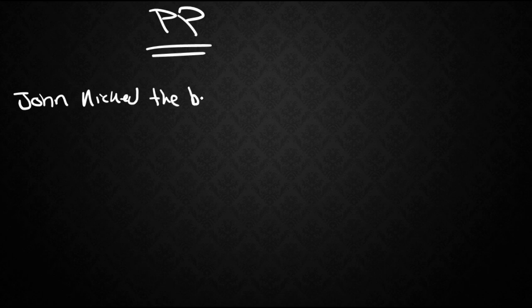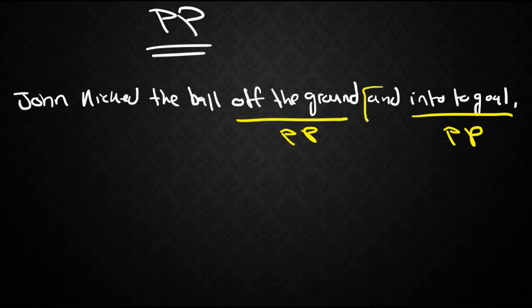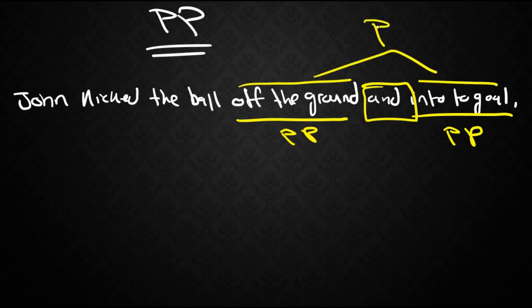Last one we're going to talk about here is the prepositional phrase. Now there's less evidence to bar projections in a prepositional phrase but nevertheless the evidence still exists. Take for example John kicked the ball off the ground and into the goal. So we have the prepositional phrase off the ground and into the goal being coordinated meaning that these two are of the same type and they are coordinated together so they seem to create one big prepositional phrase.